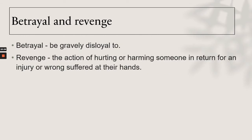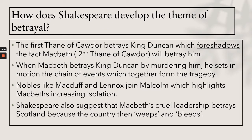Betrayal means to be gravely disloyal, and revenge is the action of hurting or harming someone in return for an injury or wrong suffered at their hands. Shakespeare develops the theme of betrayal: the first Thane of Cawdor betrays King Duncan, which foreshadows the fact that Macbeth, the second Thane of Cawdor, will betray him too.